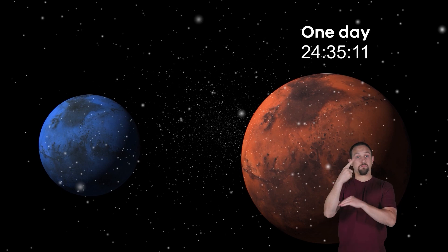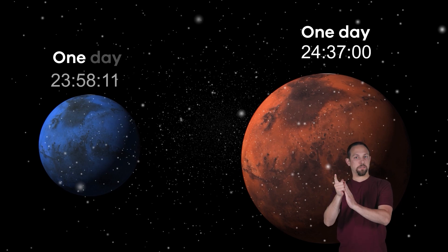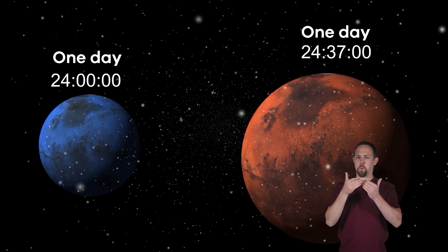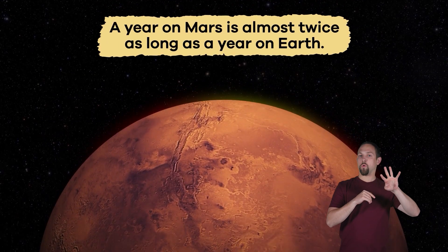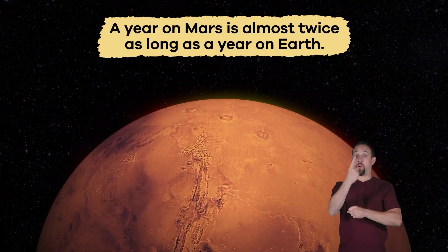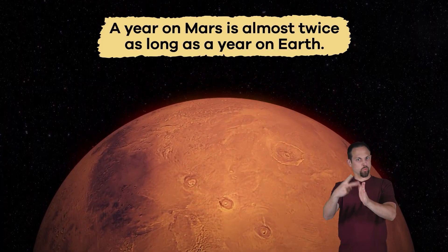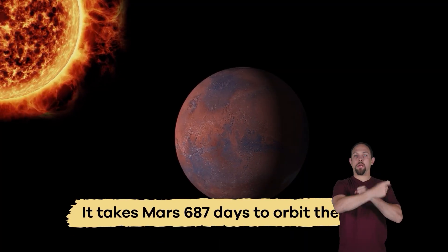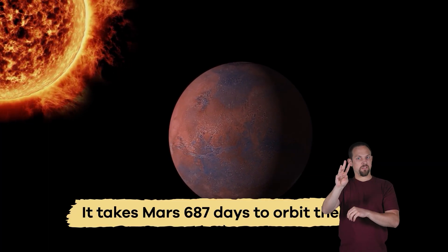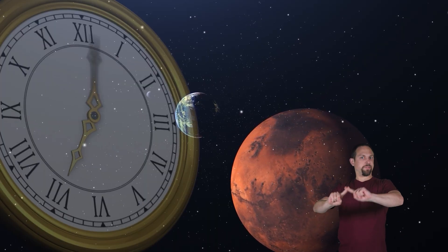A day on Mars lasts 24 hours and 37 minutes, which is just slightly longer than a day on Earth. But a year on Mars is almost twice as long as a year on Earth. It takes Mars 687 days to orbit the Sun. So time on Mars is pretty different than what we are used to here.